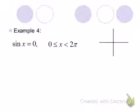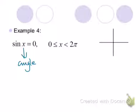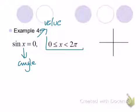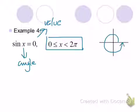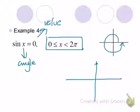Next example: sine of x equals 0. We want to identify the angle that has a sine value of 0, and I'm limiting it to the domain 0 to 2 pi — we're only going to go around once. This could be 4 pi, in which case we would want answers if we went all the way around twice. But we're going to start at 0 and stop at 2 pi.